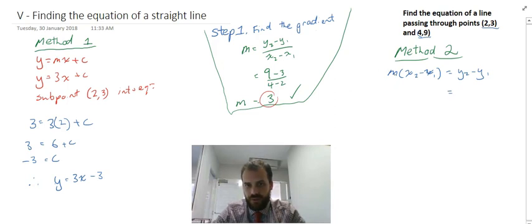I can put in 3 for the gradient, and I can put in one of these points as x2 and y2. It doesn't matter which one. I'm going to choose this first point here, so x2 is going to be 2. Now x1, I'm not going to replace x1 with anything except for the letter x. I'm just going to let that be x. y2 is 3 minus, and y1 is just y.